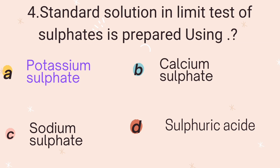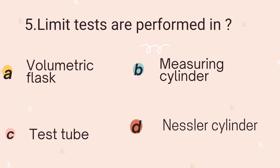Fifth question: In the limit test, what type of cylinder is used? Option A is volumetric flask, Option B is measuring cylinder, Option C is test tube, and Option D is Nessler cylinder. The correct answer is Nessler cylinder.